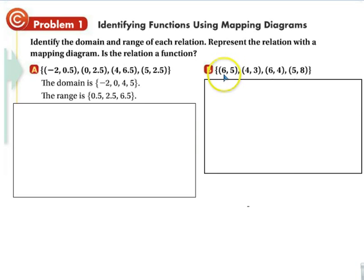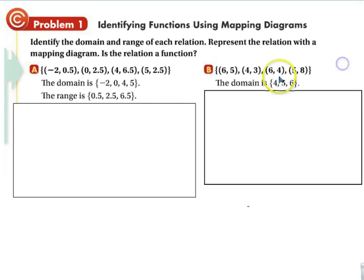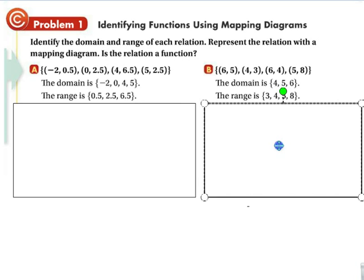Let's do this one. The domain is 6, 4, and 5. 6, 4, 5, and 6. There's a 4, there's a 5, and there's a 6, and the 6 is repeated. The range is 3, 4, 5, and 8.